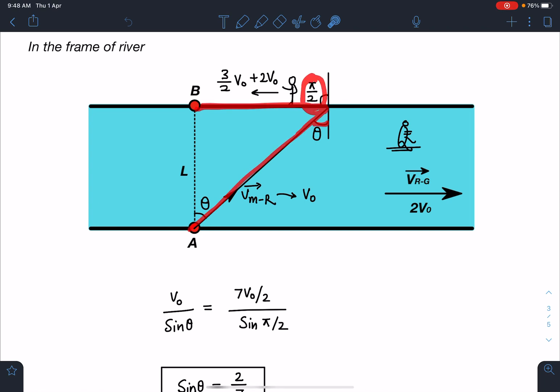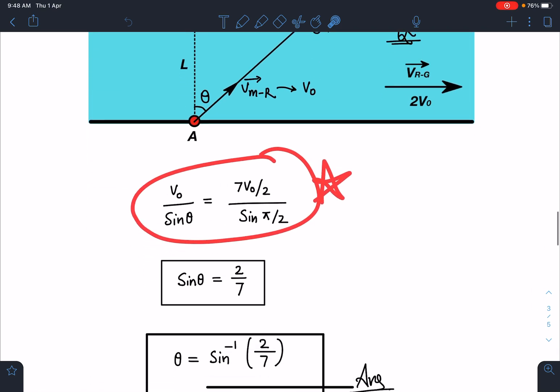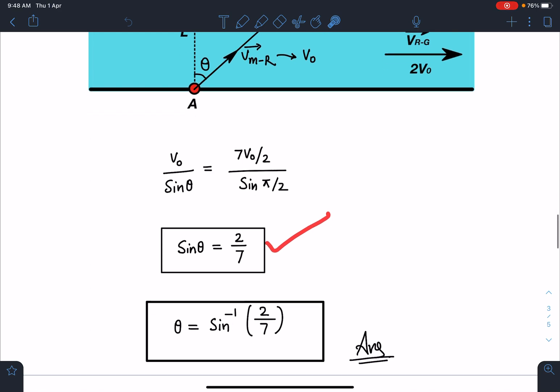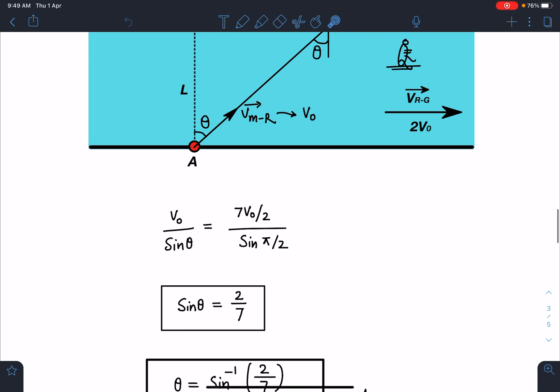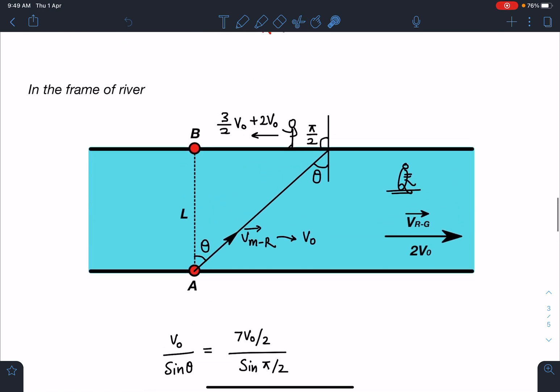And then he is going in this direction, so you can see this angle is π/2, quite similar to the situation of you can say total internal reflection. So if you apply this logic here, we are going to get V₀/sin θ divided by (3/2 V₀ + 2V₀) which is 7/2 V₀ divided by sin(π/2). If we apply this and simplify, we are going to get sin θ equal to 2/7, which is θ is equal to sin⁻¹(2/7). It makes this question as just one liner, and I hope you have enjoyed this problem and its solution.